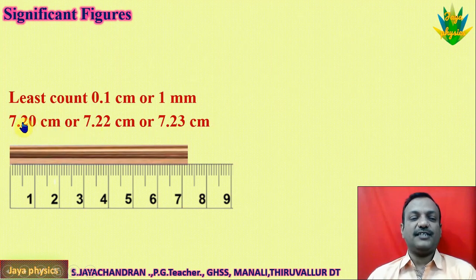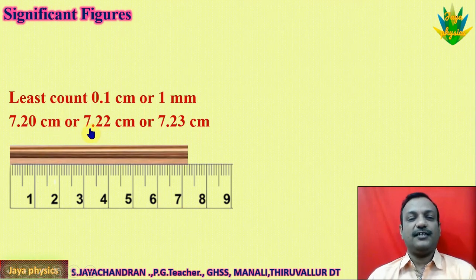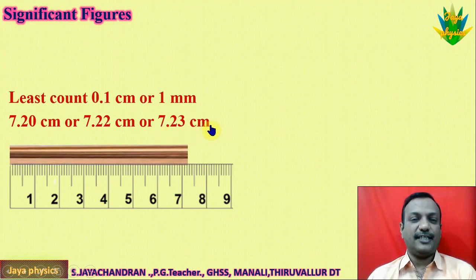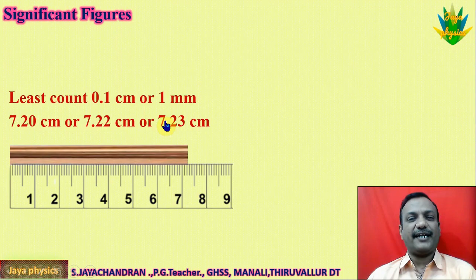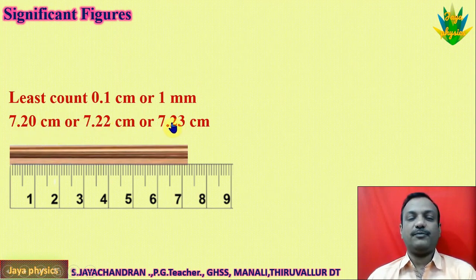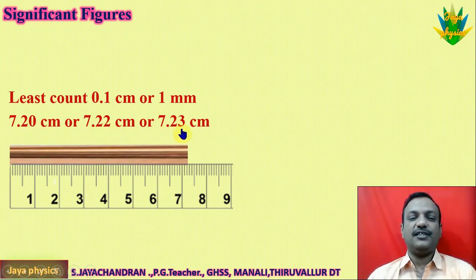The boy says the rod is 7.20 centimeters. The first girl says 7.22 centimeters, and the second girl says 7.23 cm. If you look at this, the first two digits are reliable — 7.2, 7.2, 7.2 are accurate. The third digit varies: 0, 2, 3. So the third digit is uncertain.